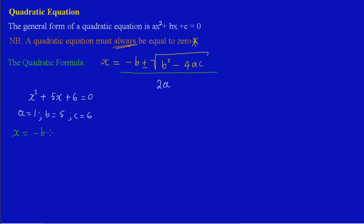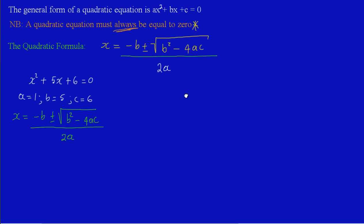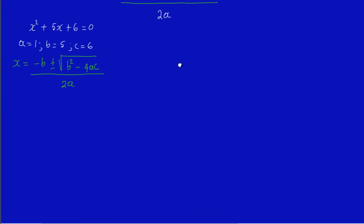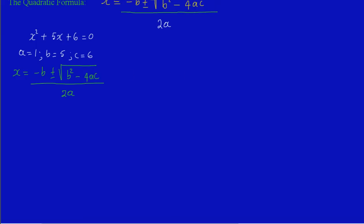Let me not use red because the red can be a little bit strenuous on the eyes. So let me say x is equal to minus b plus or minus the square root of b² minus 4ac, all over 2a.